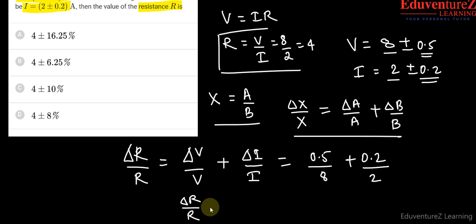So this will be equal to delta R upon R equals to... so 0.5 divided by 8 you will get 0.0625 plus 0.1, so it will be 0.16.